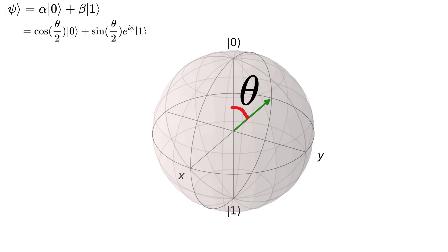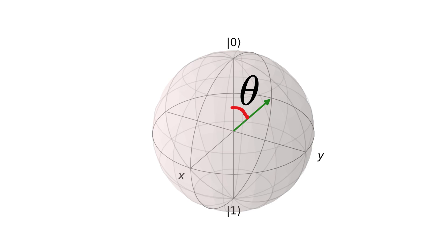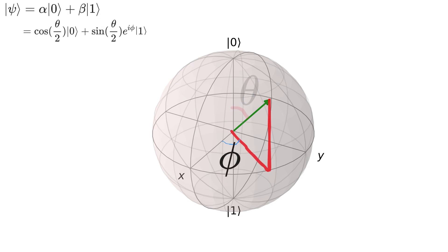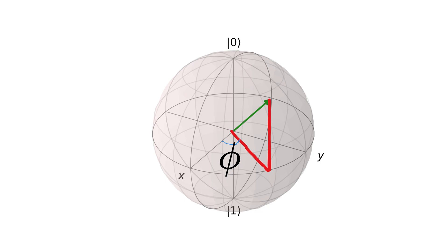Here, theta is the angle from the z-axis to the state vector, and phi is the angle from the x-axis to the projection of the state onto the xy-plane.